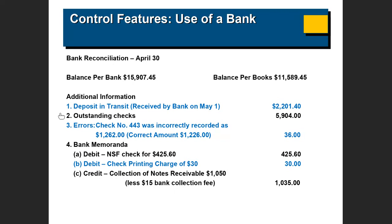The third item is an error: check 443 was recorded as $1,262 in the accounting records, but the correct amount is $1,226. The check was written for $1,226 and given to someone — so when they take it to the bank, the bank will subtract $1,226 from your account. But in the accounting records, the debit and credit was recorded for $1,262.